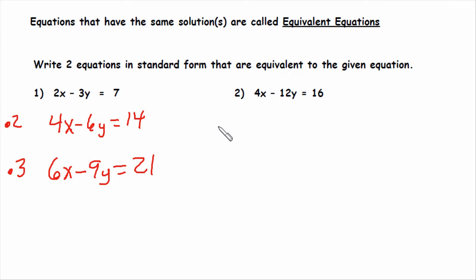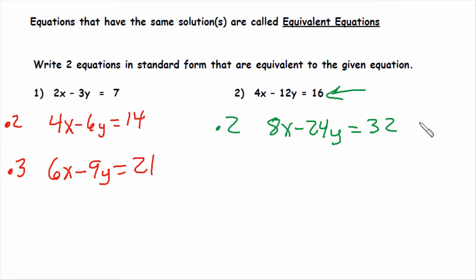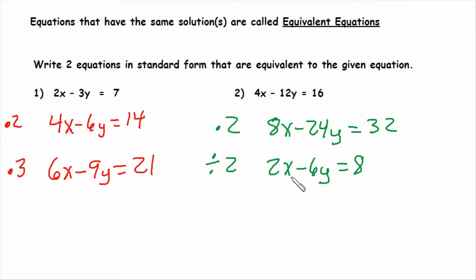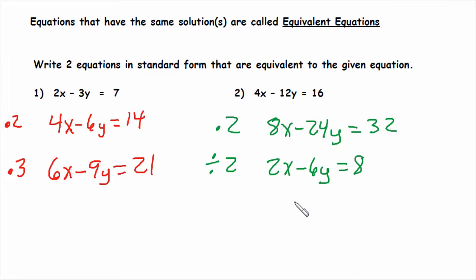In example two, we'll multiply by two first, giving us 8x minus 24y equals 32 — an equivalent equation. This and the original produce the same points and the same line. We can also divide by two, giving us 2x minus 6y equals 8. As long as we do the same operation to all terms on both sides, the equations are equivalent and these three lines produce the exact same graph.